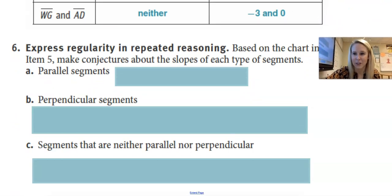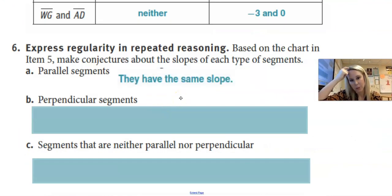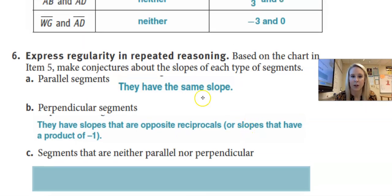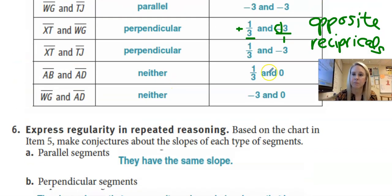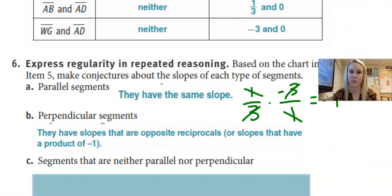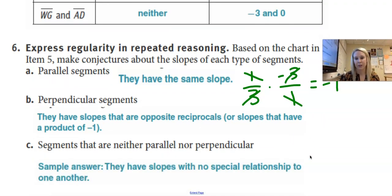Okay? So based on the chart, I want you to make a conjecture about the slopes of each types of segments, and I'm pretty sure I gave you the answer, but parallel lines are going to have the same slope. They will have the same slope. Perpendicular segments, they're going to have slopes that are opposite reciprocals or slopes that have the product of negative one. So where that comes into play is if I were to multiply one third and negative three over one, one and one would cancel to a one. Three divided by three is a one. And so your answer is a negative one. So if you multiply the products of perpendicular lines, you get negative one. Segments that are neither parallel nor perpendicular, they have slopes with no special relationship.